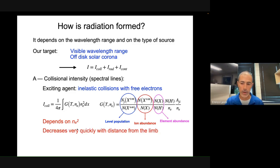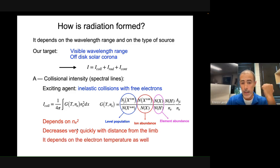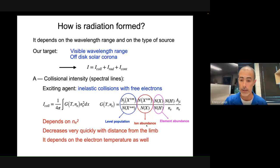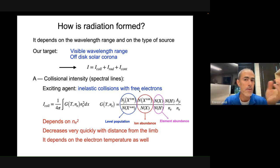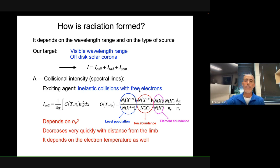The rapid decrease with distance from the limb is one of the advantages of having instruments observing the visible. The intensity also depends on electron temperature through the level population and ion abundance — most importantly the ion abundance — because ions are formed within a certain temperature range. If you see a line, you are seeing plasma at that particular temperature. For example, iron 13 forms at around 6.2 million degrees. If you are out of ionization equilibrium, you need methods to determine the temperature at which that ion forms.